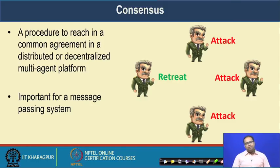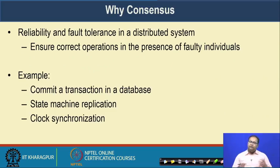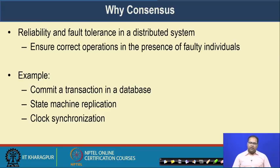This kind of consensus algorithm is important for a message passing environment in a distributed system. Let us first look into why we require consensus. In a traditional or conventional distributed system, we apply consensus to ensure reliability and fault tolerance. By reliability and fault tolerance, we mean that in a decentralized environment when you have multiple individual parties that can take their own decisions, it may happen that some nodes or parties are working maliciously or as a faulty individual. In those cases, it is important to come to a common decision or a common viewpoint.